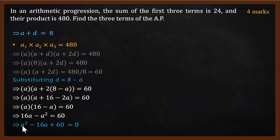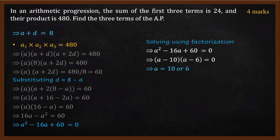This gives us a quadratic equation. Expanding and simplifying: a squared minus 16a plus 60 equals 0. We will solve this quadratic using factorization.